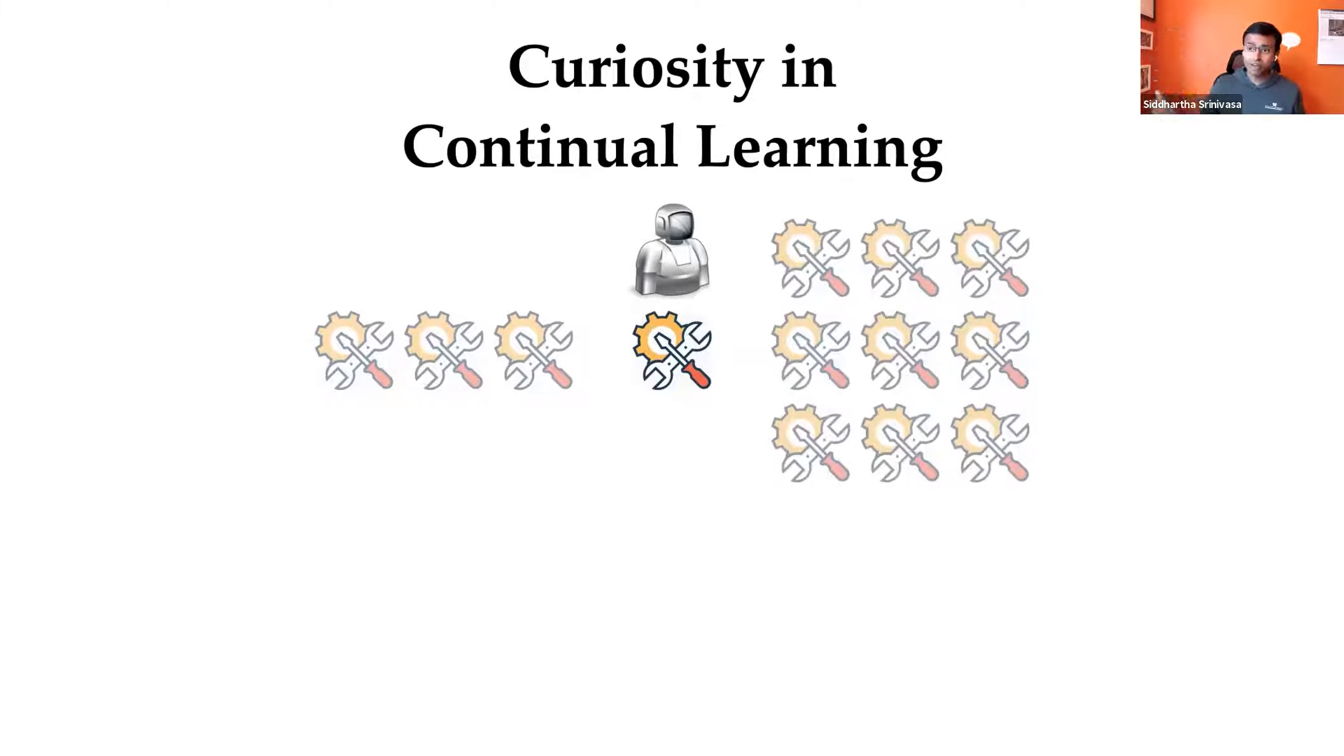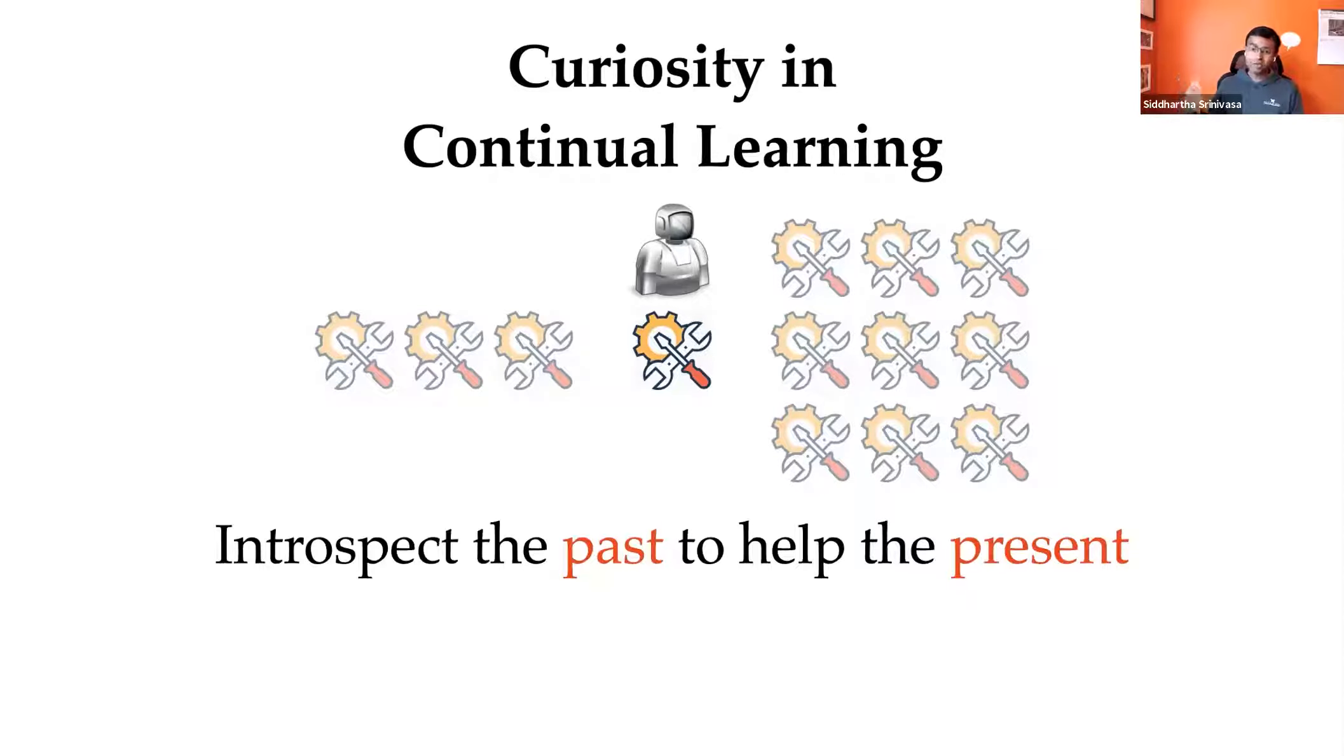I also want to talk about curiosity in the continual learning context. In our lifetimes or in the robot's lifetimes, it has a history of interactions that it's had in the past, a present which it is currently working in, and an uncertain future. One way of interpreting curiosity might be to introspect the past to help the present. We're in the present now, but we use the scars that we've developed from our history to really help us guide how we want to behave in the present. In many ways we are seeking things that are familiar to us.